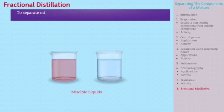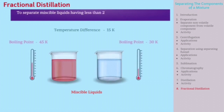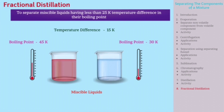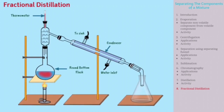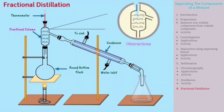Next method is fractional distillation. The apparatus is similar to a simple distillation apparatus. The only difference is that a fractionating column is connected between the distillation flask and the condenser. Due to the low difference in boiling point, both liquids evaporate simultaneously and face obstruction in the fractionating column.